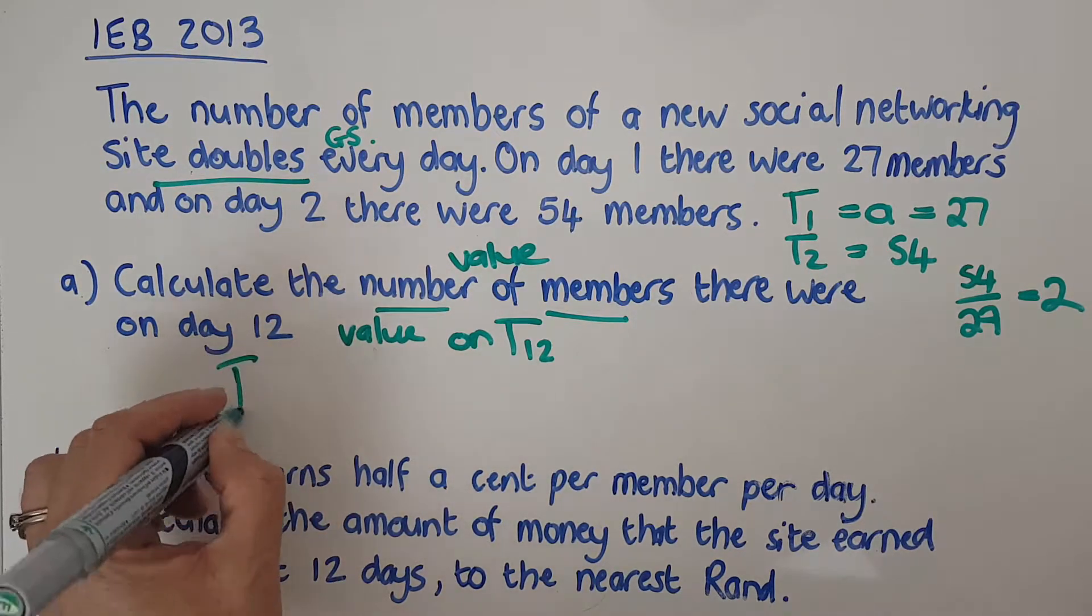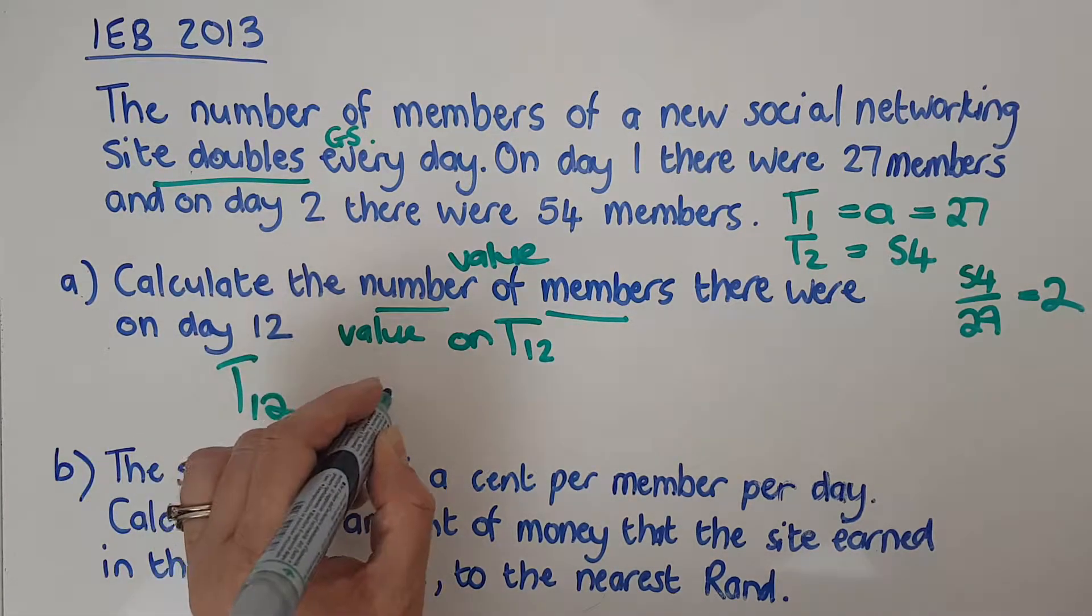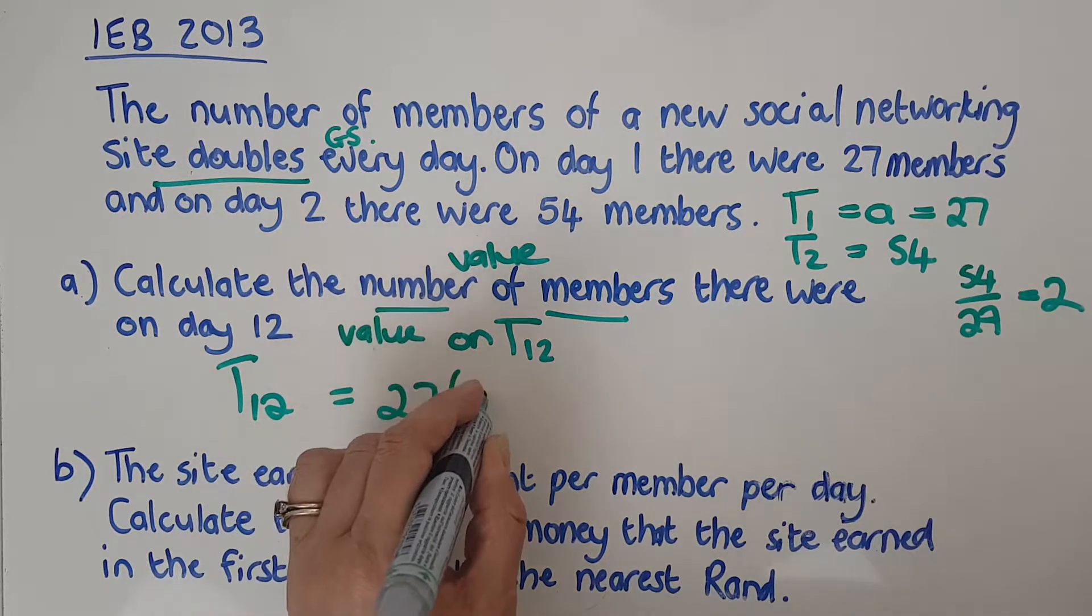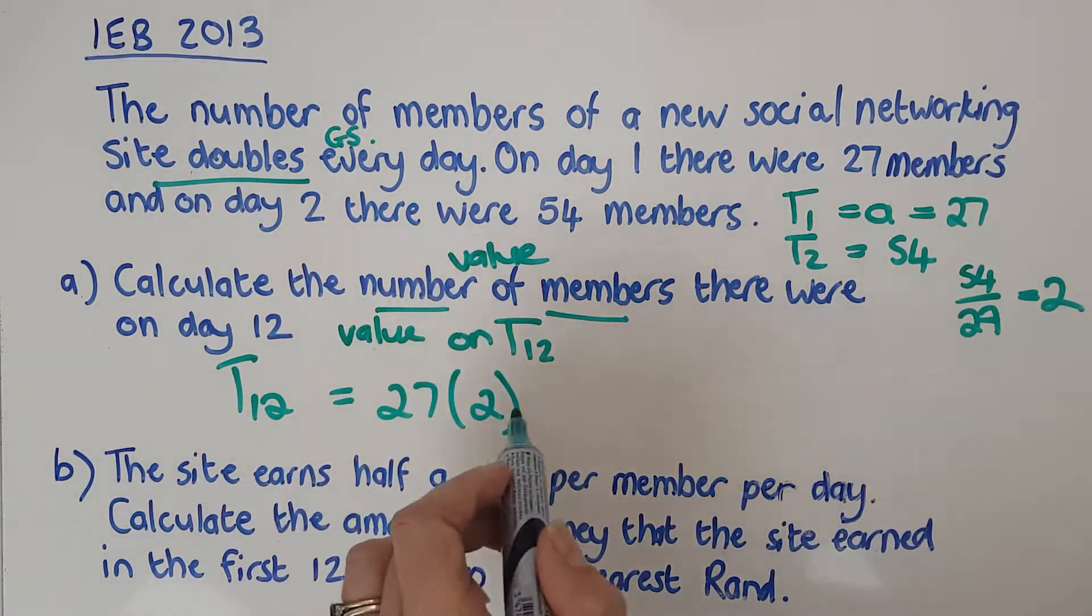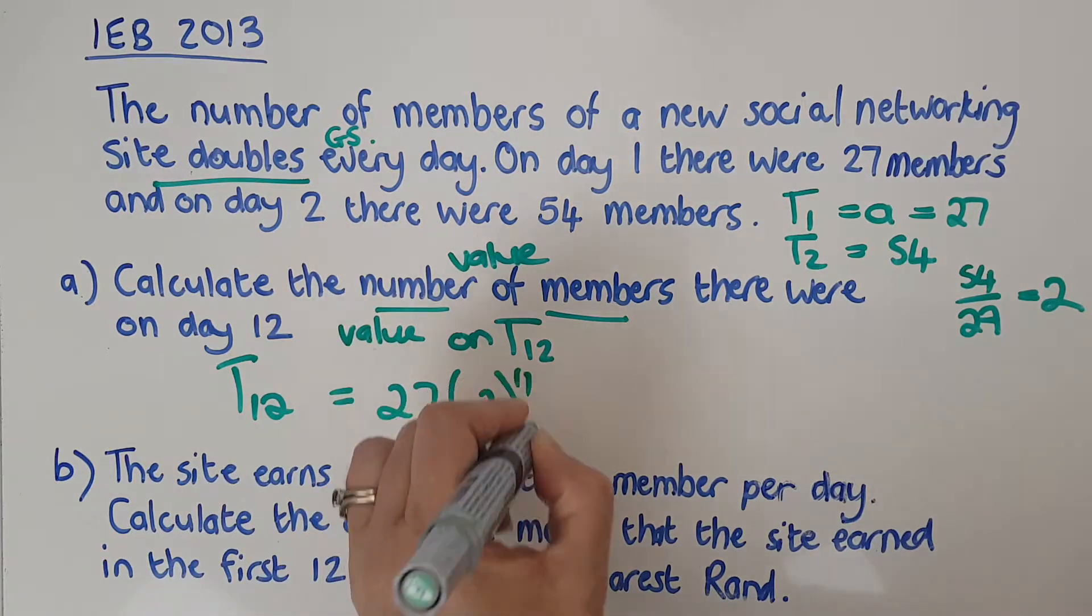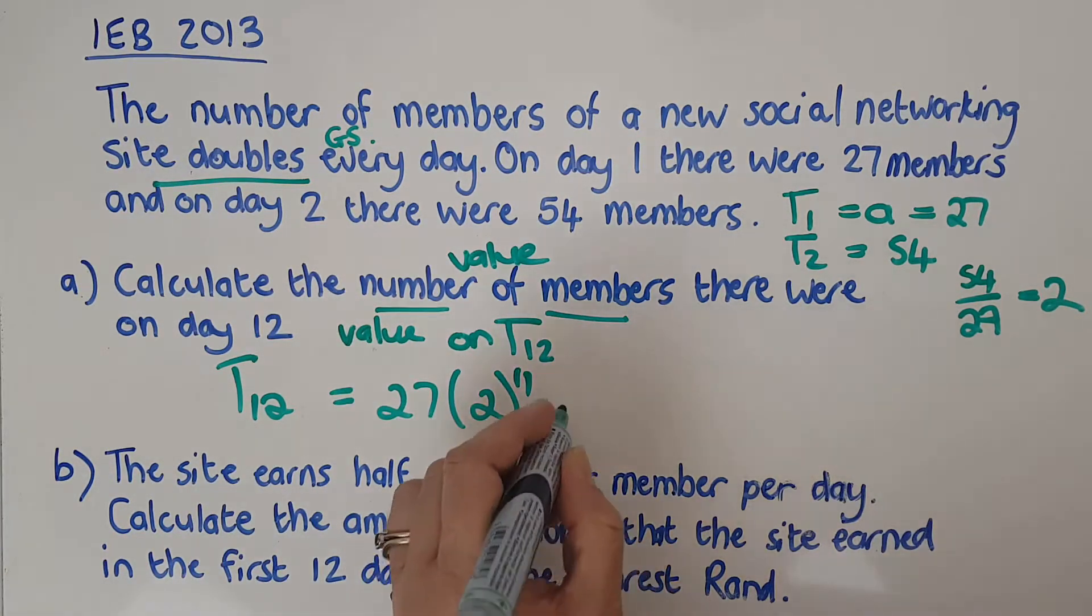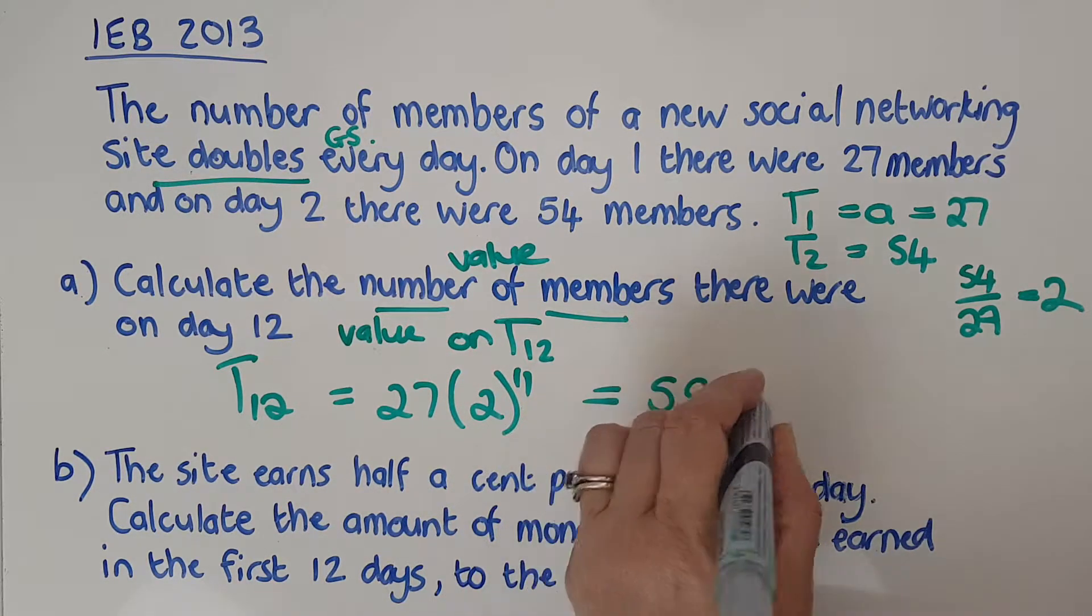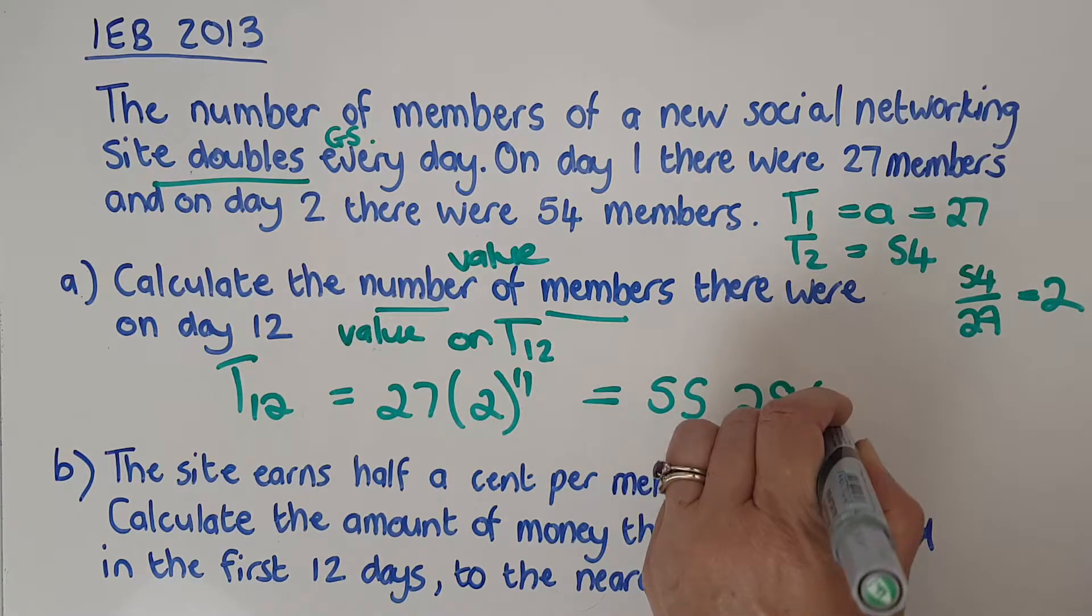I'm going to say T12 is going to be A, which is 27, R, which is 2, to the N minus 1. N is 12, so N minus 1 is 11. And I can sub that straight away in. So putting that into the calculator, I get 55,296 members.